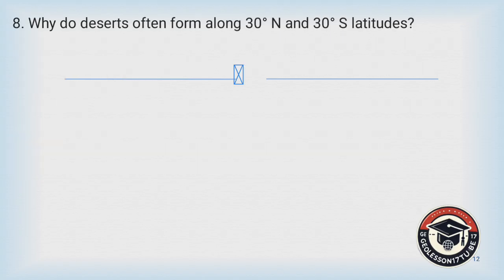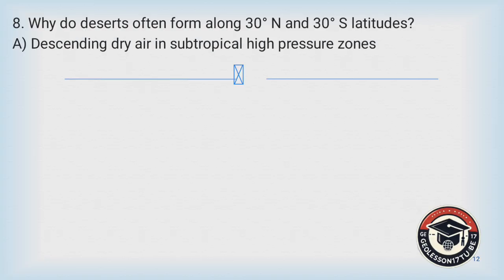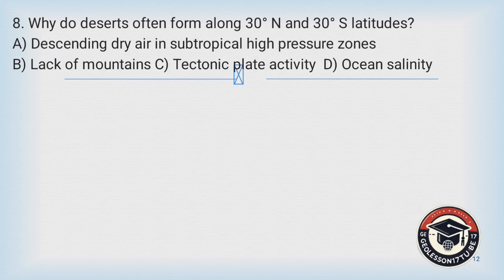Question number eight: Why do deserts often form along 30 degrees north and 30 degrees south latitudes? A) Due to the descending dry air in subtropical high pressure zones, B) due to the lack of mountains, C) due to tectonic plate activity, D) due to ocean salinity.